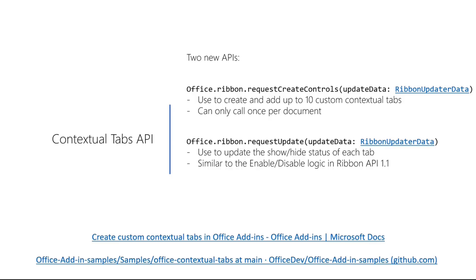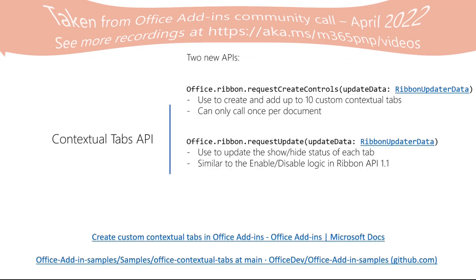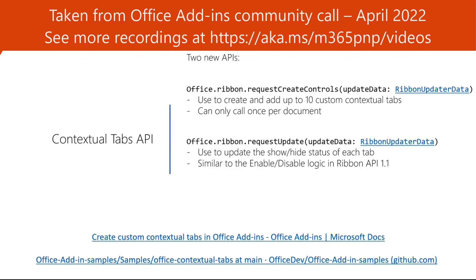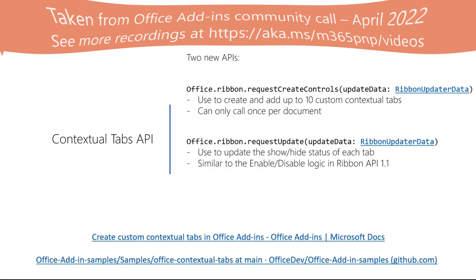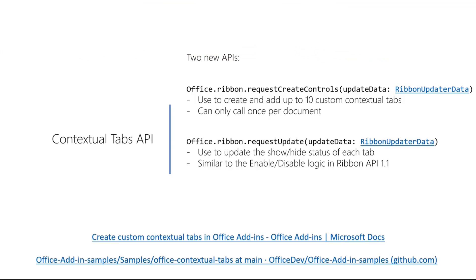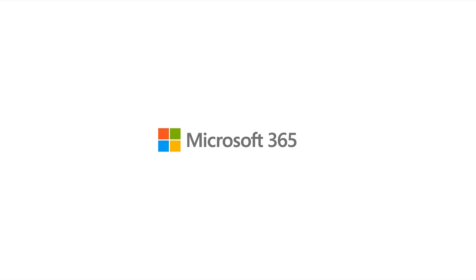Those are the updates for our Ribbon API. We're excited for you to try them out, especially the one in preview. Please try out the enable/disable feature for Word and PowerPoint and give us any feedback you have. That's all for us — thank you.